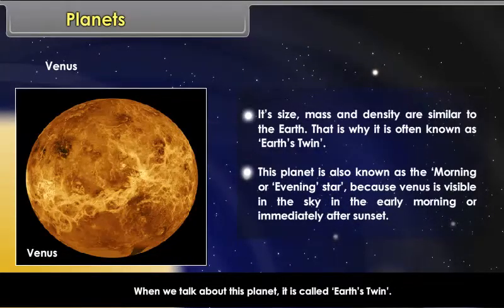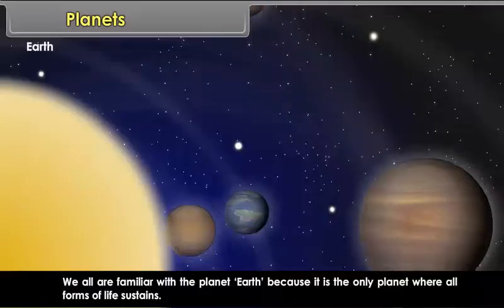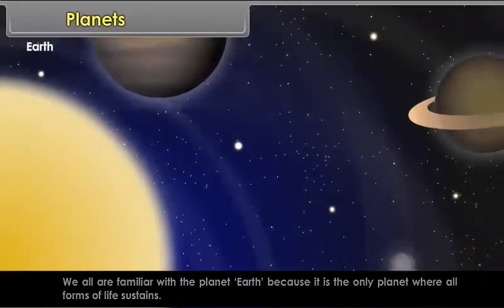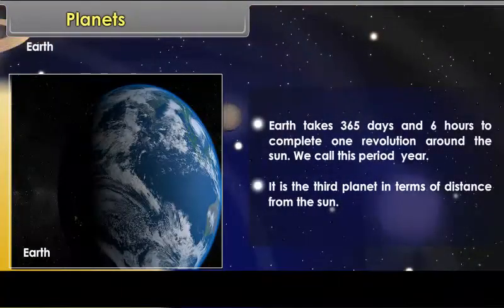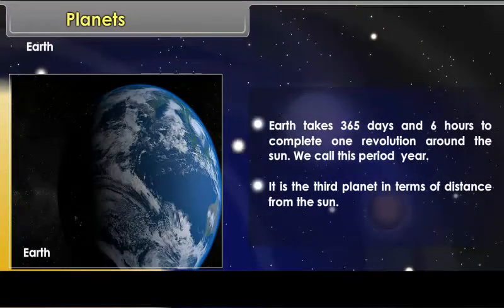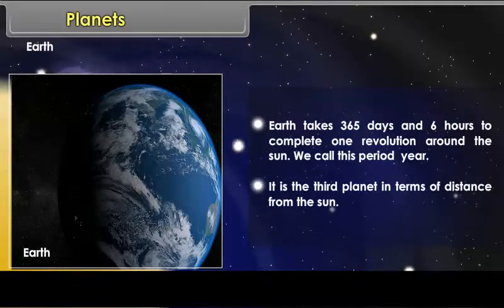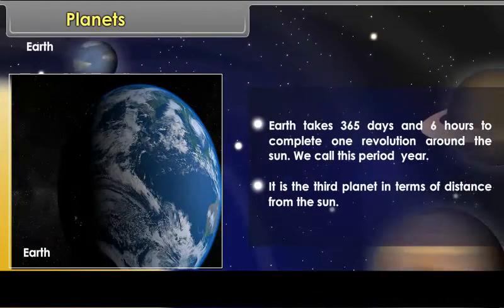Earth. We all are familiar with the planet Earth because it is the only planet where all forms of life sustains. Earth takes 365 days and 6 hours to complete one revolution around the Sun. We call this period, year. It is the third planet in terms of distance from the Sun.